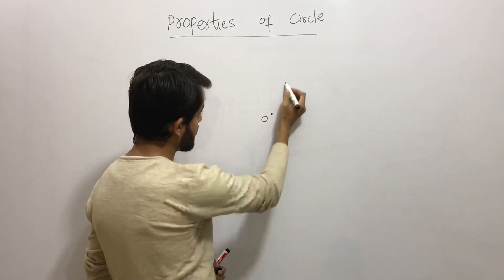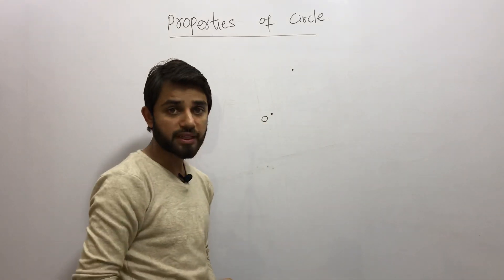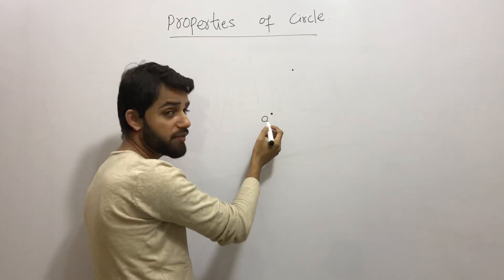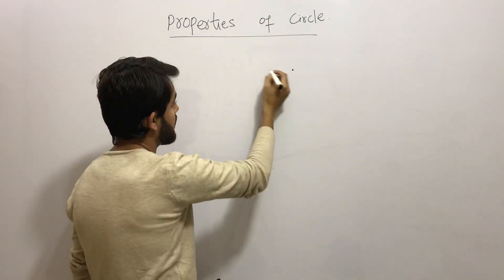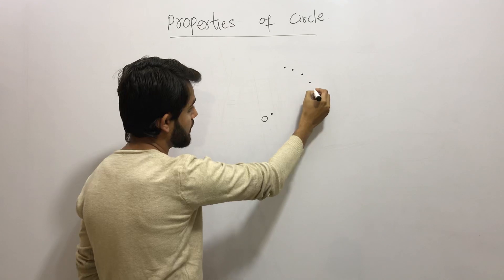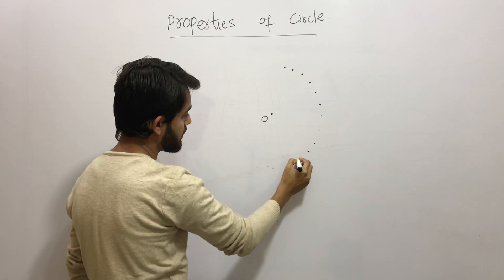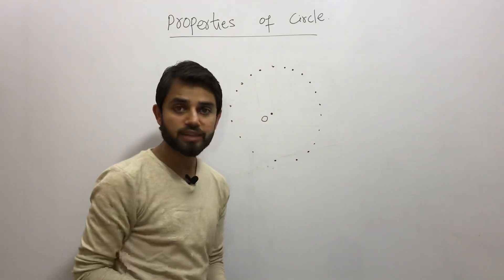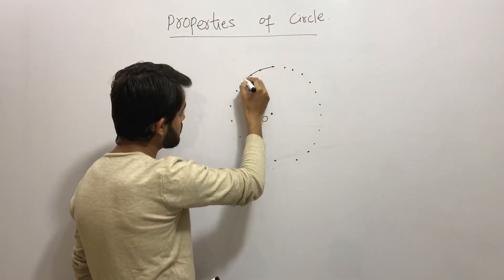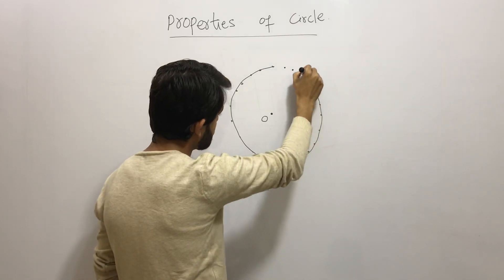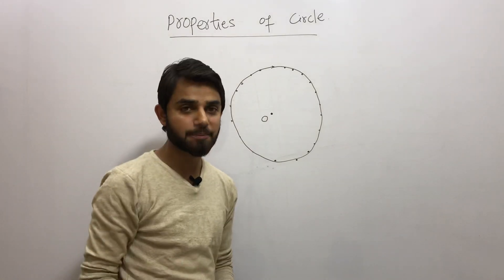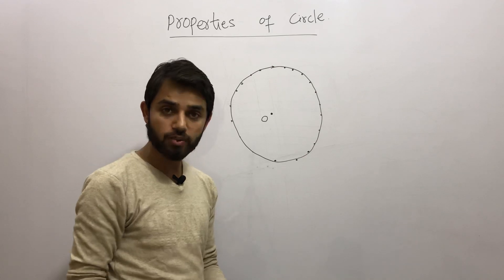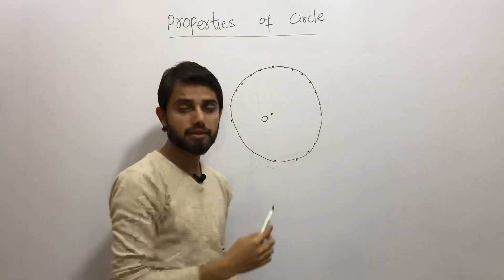Now I am taking another point which is some distance away from point O, and then another point which has the same distance from O. I will take as many points as I can, making sure all the points have the same distance as the initial points. Once you join all these points they form a circle. So all the points that are equidistant from a fixed point is basically called a circle.